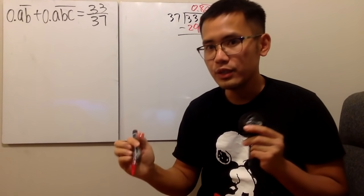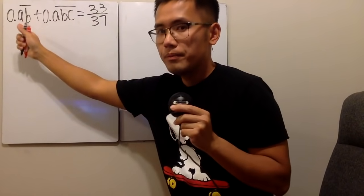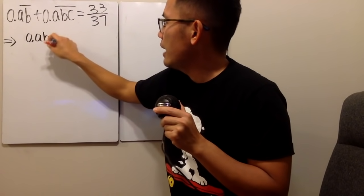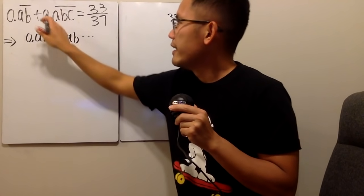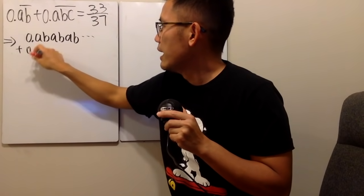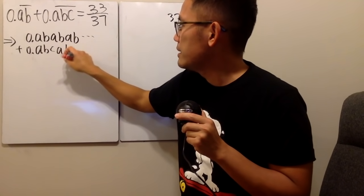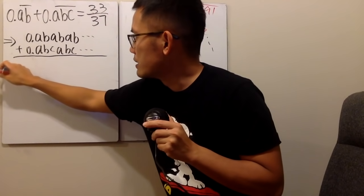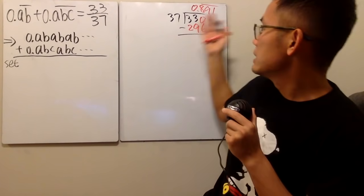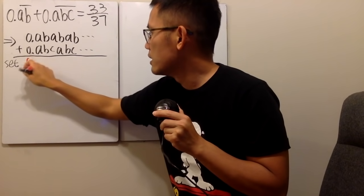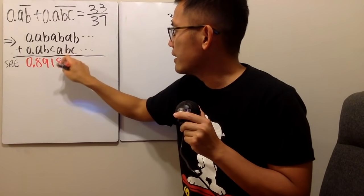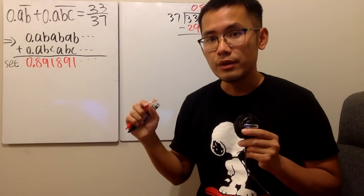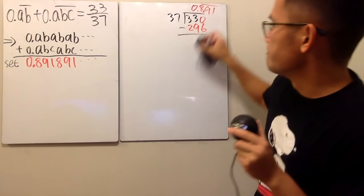Now let's convert everything into decimal form. We have 0.ABABAB... forever, and we add 0.ABCABCABC... forever. We want this sum to equal 0.891891891... and so on.